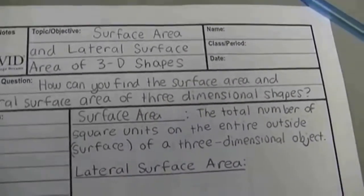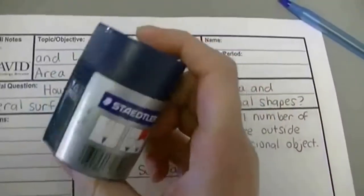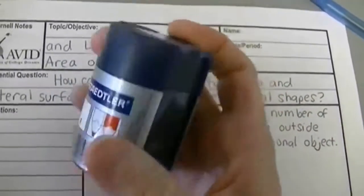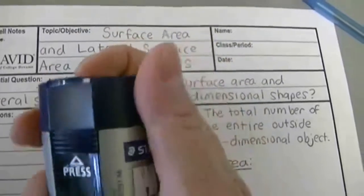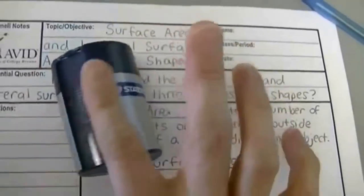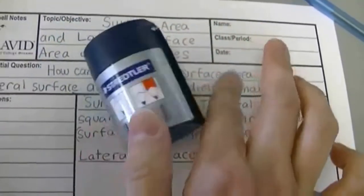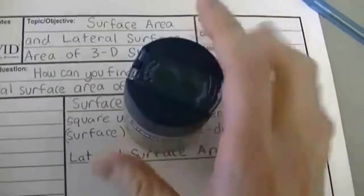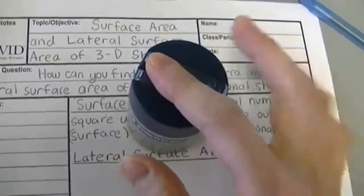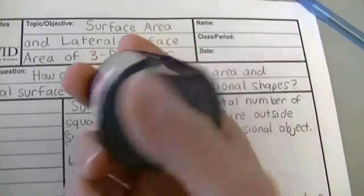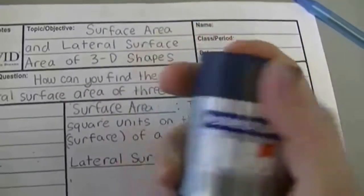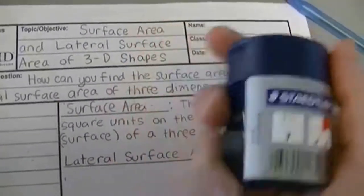Surface area would be like if I took this cylinder and found the area of the circular parts on the top and the base and added all those areas together. That would be the surface area.